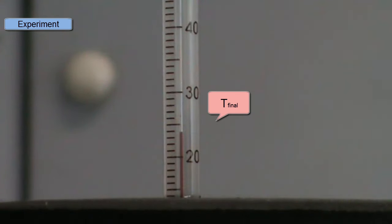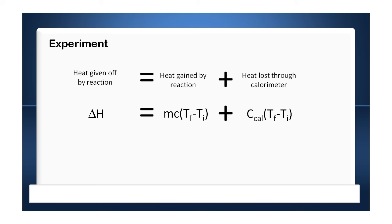So I now know my initial temperature, I know my final temperature, so I know how much heat was given off in the reaction. That coupled with information about the calorimeter constant, I can work out how much heat was lost to the calorimeter, plus how much heat was gained by the reaction. And the heat given off by the reaction is the sum of these two.